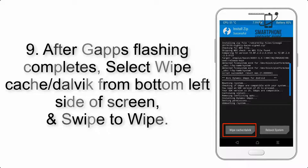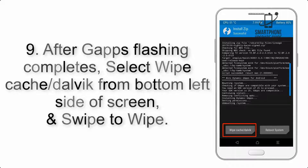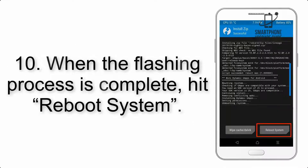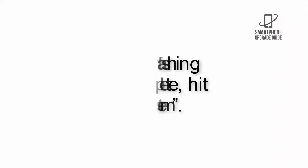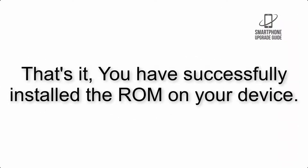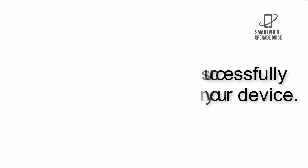Step 9: After GApps flashing completes, select Wipe Cache and Dalvik from the bottom left side of the screen and swipe to wipe. Step 10: When the flashing process is complete, hit Reboot System. That's it — you have successfully installed the ROM on your device.